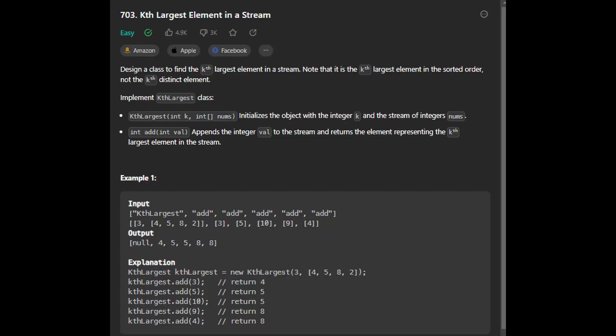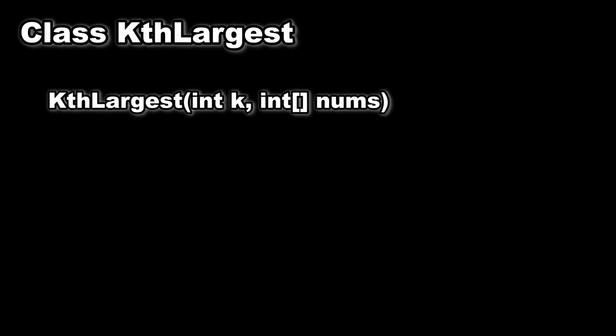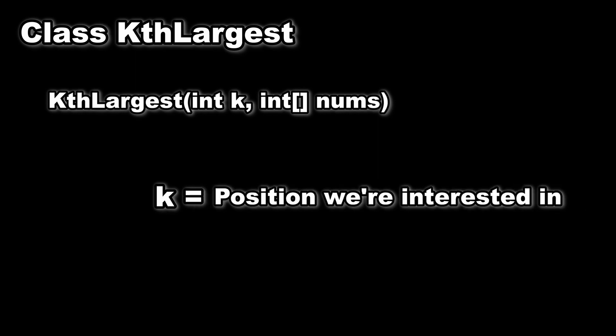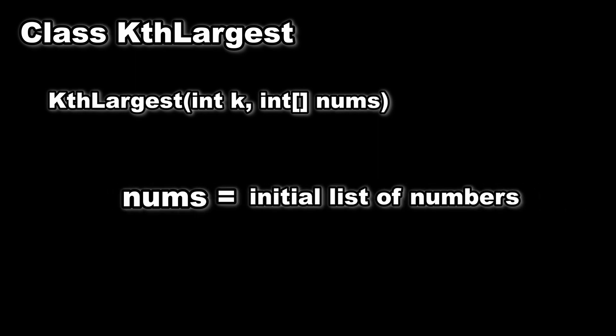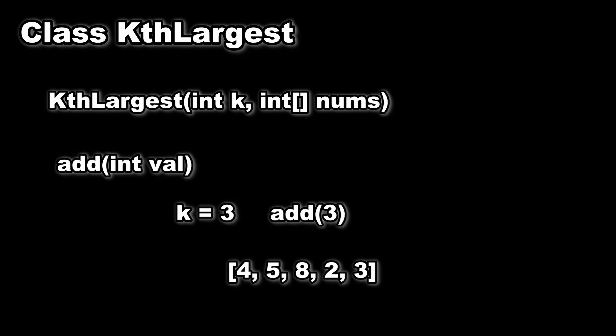Design a class to find the kth largest element in a stream. Note that it is the kth largest element in the sorted order, not the kth distinct element. Implement the kth largest class. This problem is asking you to create a class named kth largest, and we have to implement two methods: the constructor, which takes in an integer k and a stream of numbers nums, where k is the position of the largest element we're interested in, while nums is the initial list of numbers. We also have to implement the add method, which appends an integer value to the stream and returns the kth largest element in the updated stream.